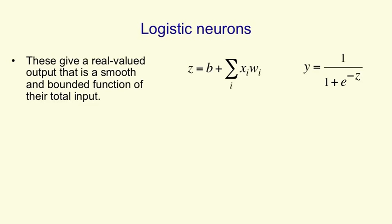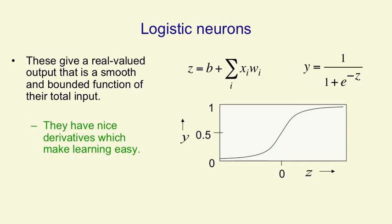It then gives an output y that's a smooth non-linear function of that logit. As shown in the graph here, that function is approximately zero when z is big and negative, approximately one when z is big and positive, and in between it changes smoothly and non-linearly. The fact that it changes continuously gives it nice derivatives which make learning easy.